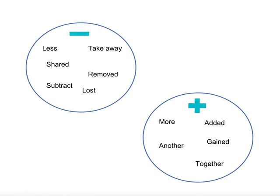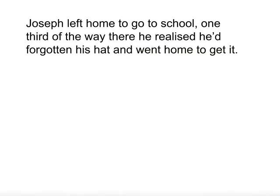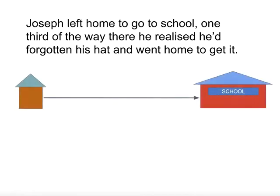You can see that looking at the keywords and deciding whether they are addition or subtraction will help us to solve the number story. So here we have a story. It can help if we draw a picture of what is happening. Joseph left home to go to school. One third of the way there, he realised he'd forgotten his hat and went home to get it. The key word is one third, and on the picture it looks like this.